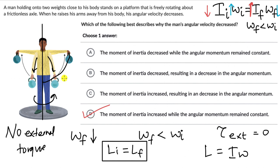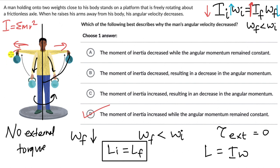We can also understand this physically. When the man raises his arms, more of the weight is away from the axis of rotation. Since moment of inertia is given by Σmr², if you increase r — if there is more mass away from the axis — the moment of inertia increases. That is exactly what happens when the man makes his hands horizontal: more mass is farther from the axis of rotation. So the right answer is option D.